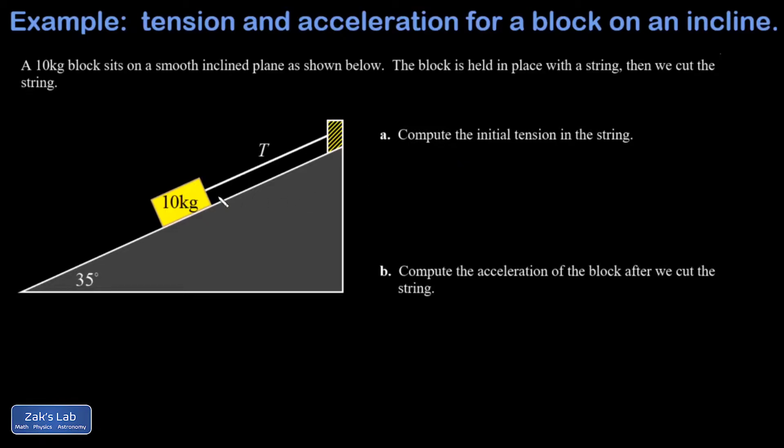We start the problem by putting in the weight vector, so the force of gravity which is straight down. The magnitude is given by mg. You might want to go ahead and put a number on that, so 10 times 9.8 is 98 newtons.